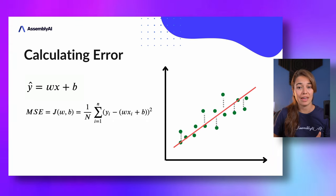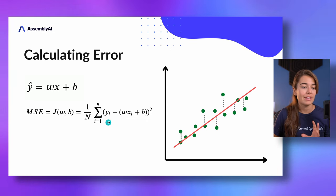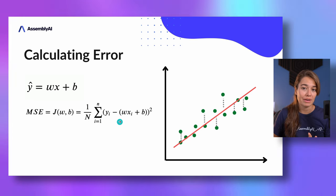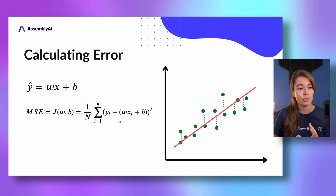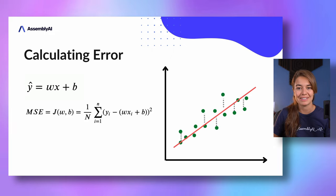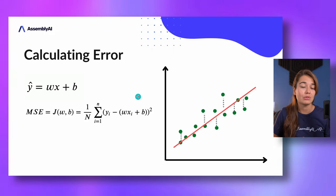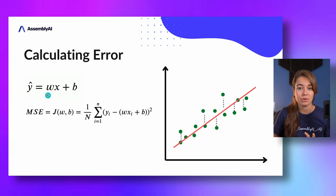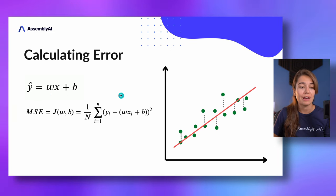To calculate the error of this line, we use mean squared error. It is calculated as the actual value of a data point minus the estimated value of a data point, squared. We do this for all the data points in our data set and then divide by the number of data points. To find the best fitting line we need to find the values for the parameters — weight and bias — that give us the minimum mean squared error.